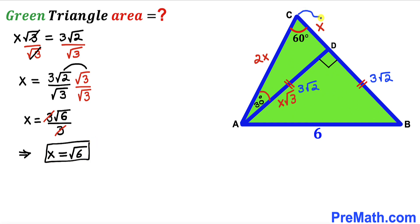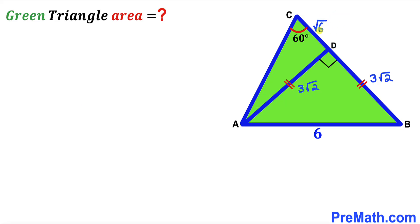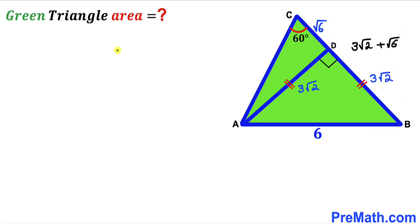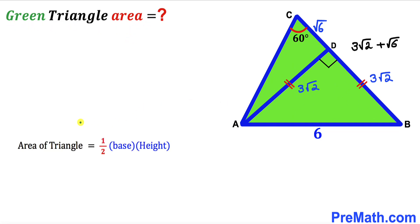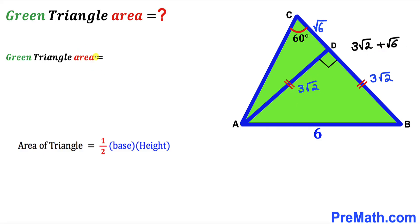Since CD = √6 and BD = 3√2, the full base BC equals 3√2 + √6. Now for the final step, we calculate the area of triangle ABC using: area = ½ × base × height, where the base is (3√2 + √6) and the height is 3√2.